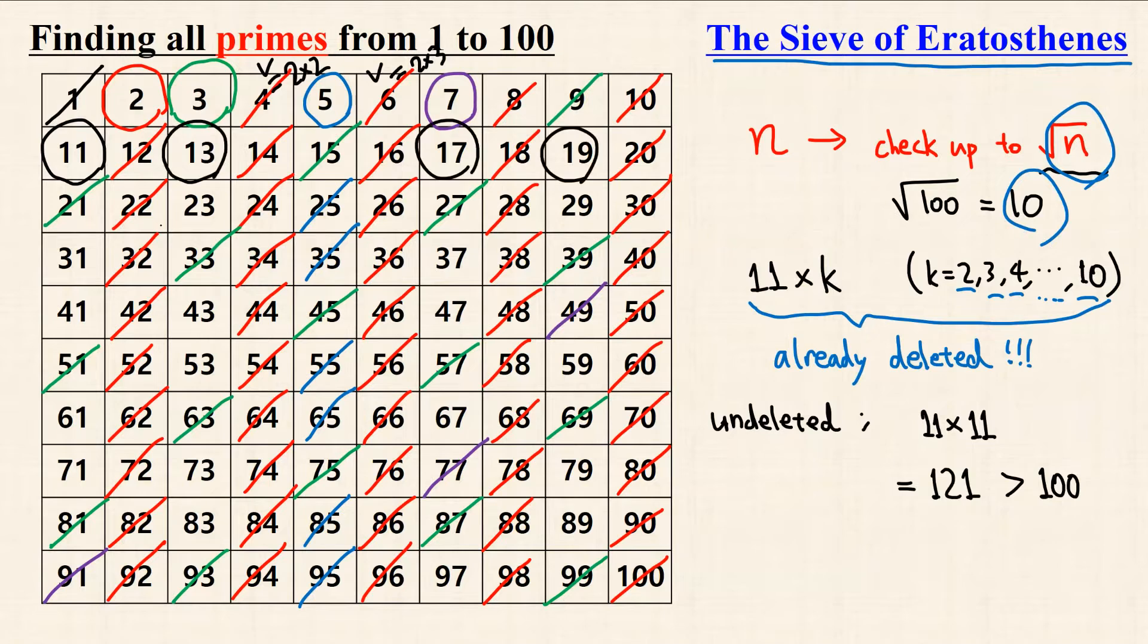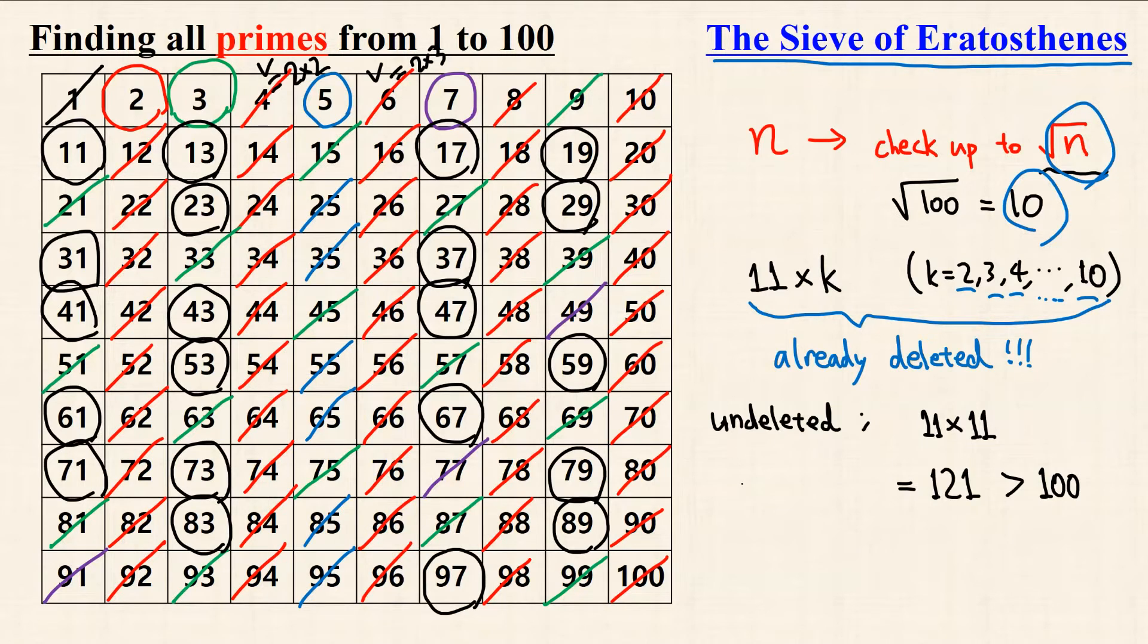So at last, these numbers are left, and these are the prime numbers from 1 to 100. Therefore, using these prime numbers,